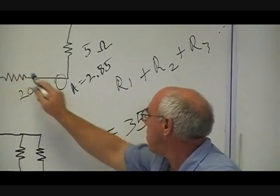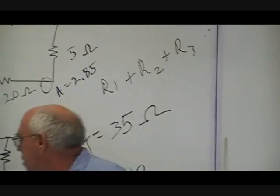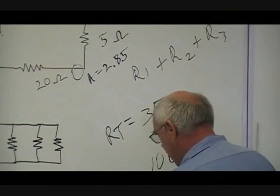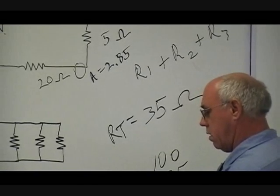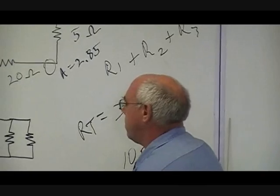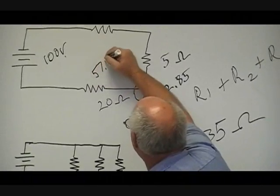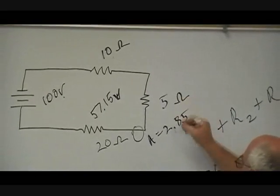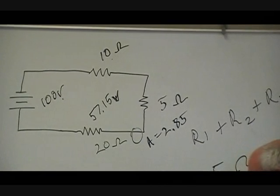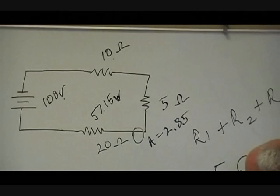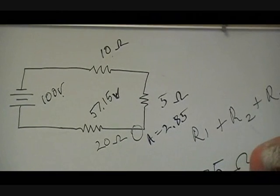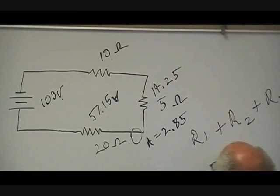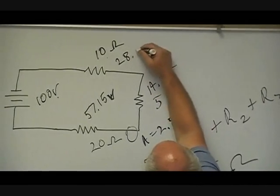Now if we want to find out what voltage drop across each resistor is, we can do that by taking the resistance times the current and it will give us the voltage drop. So we take the 2.85, multiply it by the 20, and we get 57.15. That would be the volts across this particular one. We can do the same thing with the other resistors. 5 times 2.85, this one would have 14.25 across it. And this one, I can do it in my head believe it or not, this one would have 28.5.